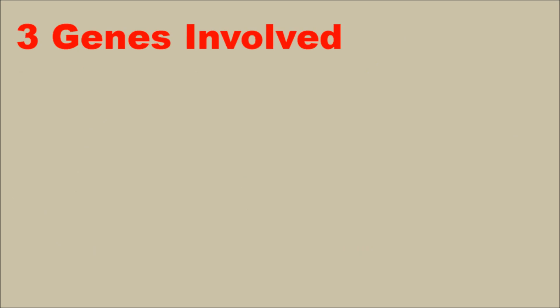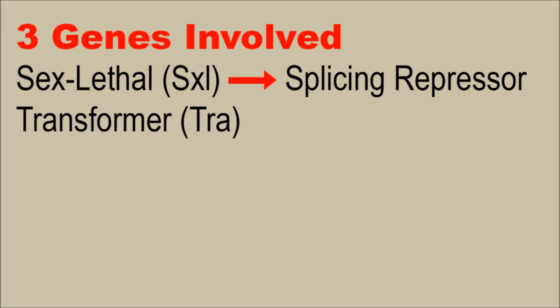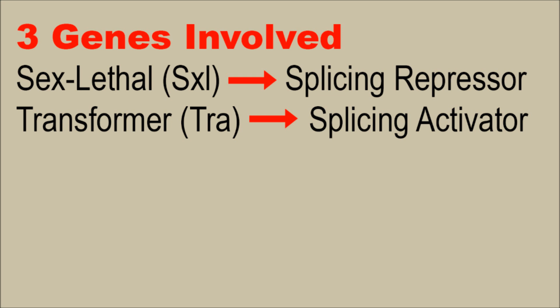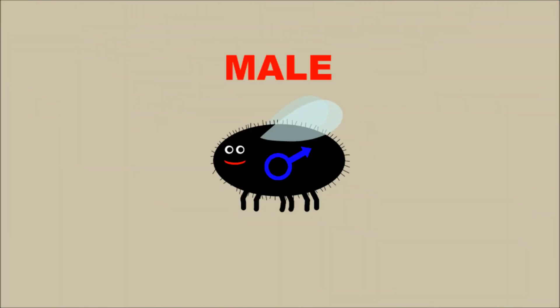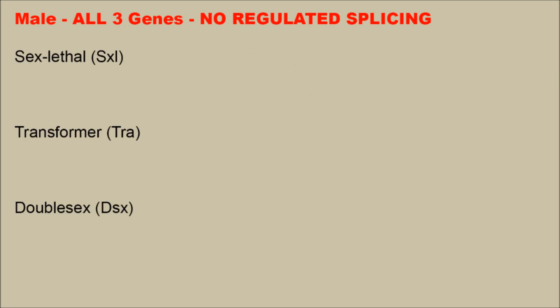There are three genes involved in Drosophila sex determination. The three genes form a pathway, and it's important to remember their function. The first is sex lethal, which is a splicing repressor. Next, you have transformer, which activates splicing. Lastly, there's double sex, which is the regulator of sex gene expression. The default pathway for Drosophila is to become male, and this is the simpler pathway. The reason for male development is that there is no regulated splicing for any of these three transcripts — this does not mean there is no splicing, it just means there are no splicing activators or repressors present to affect whether splicing occurs at any particular splice site.